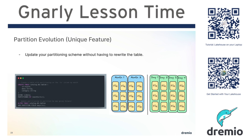Partitioning takes this a step further and says that unique values are physically written to different files and physically located in a different place. Traditionally, you'd have a subfolder within your table directory for each partition. In the example where we partition by the first letter of a name, everybody with a first name starting with A would be in separate data files from everyone with a first letter of B.